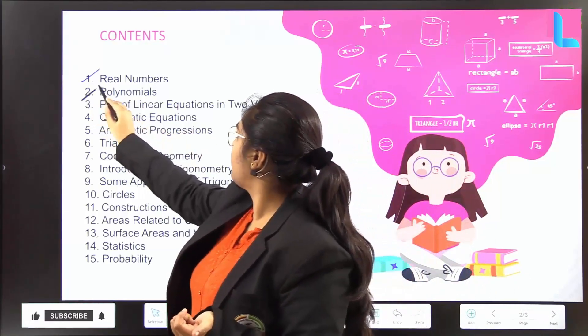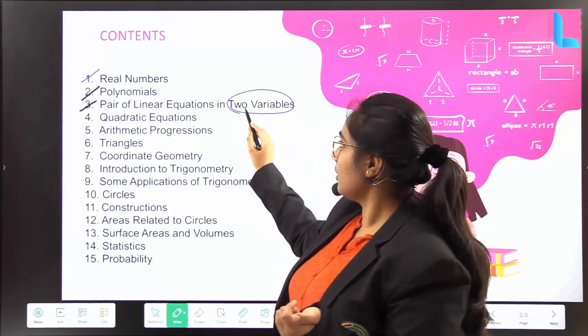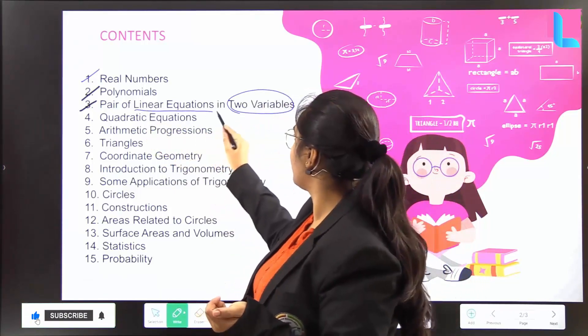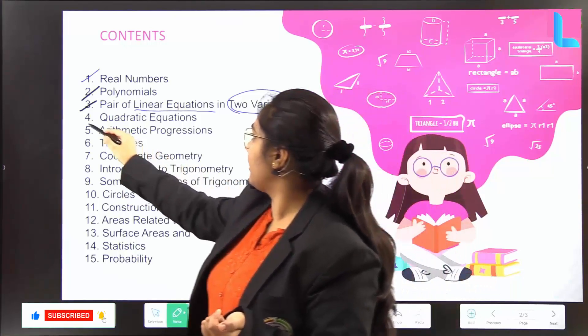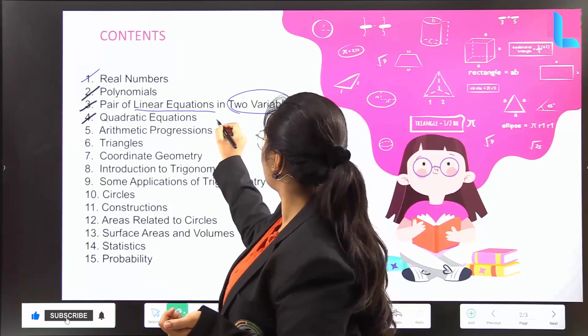Polynomials, pair of linear equations in two variables. We are going to look into linear equations in two variables, then quadratic equations. Quadratic equations, as you all know, you will be having four digits.